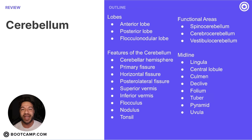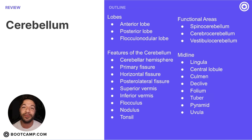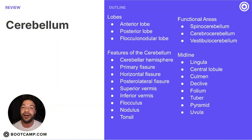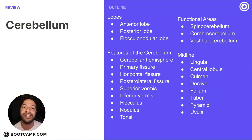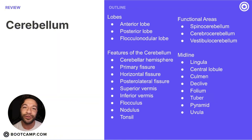John here from Anatomy Boot Camp. Welcome into another video. In this lesson we're going to be taking a look at the cerebellum, which is like the mini brain of the nervous system, at least so that's what people think. But you'll see it actually serves a completely different purpose and it has different functions compared to the rest of the cerebral cortex. So without further ado, let's jump into it.